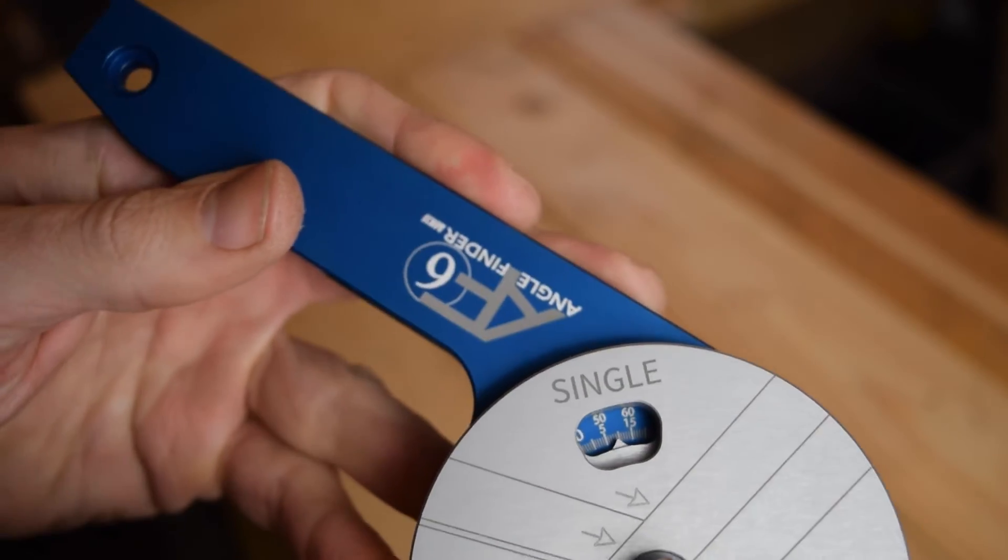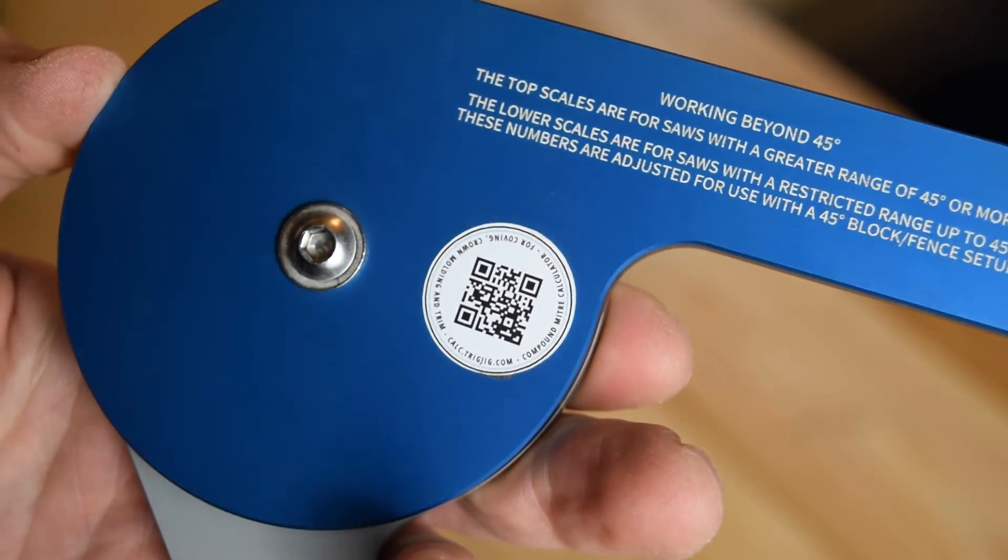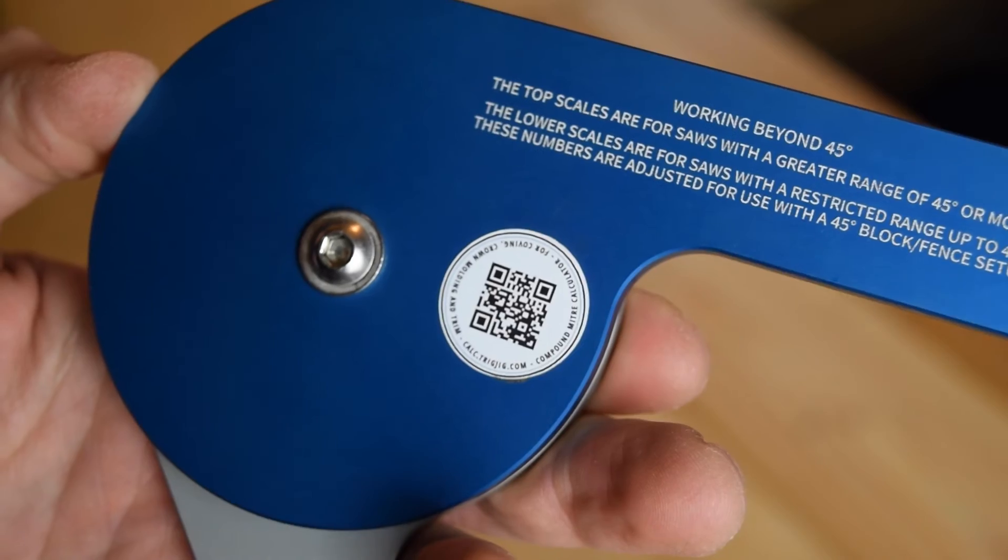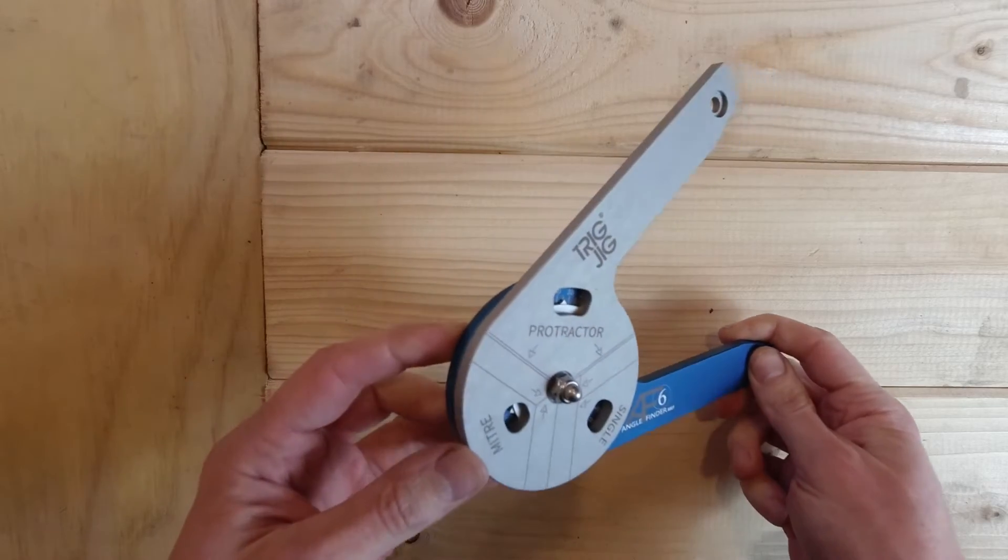The AF6 also has a QR code that if scanned with a mobile or cell phone will take you to an online coving or crown moulding calculator.